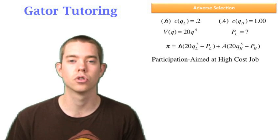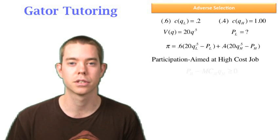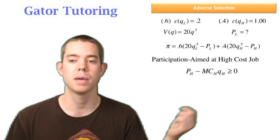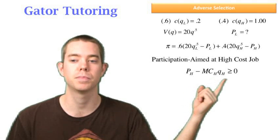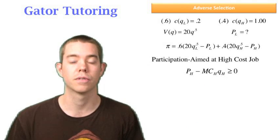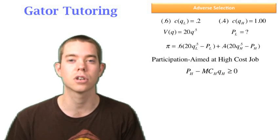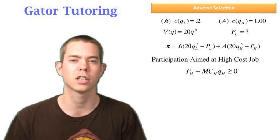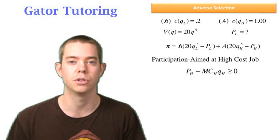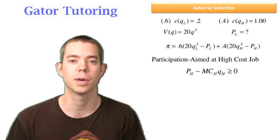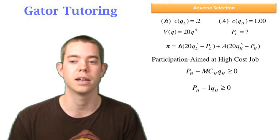Again it's aimed at the high cost job. This needs to make Joel at least participate with us, which says that the contract payment we pay him, minus the actual cost of the job, must be greater than or equal to zero. So if costs are high, we have to at least cover his cost, or he won't work with us. Because if it costs him a dollar to make it, and we're only going to pay him 90 cents per unit, well then he's going to take a loss and there's no reason he would do that. So that's the participation constraint, we can plug in our values, we know that the marginal cost, when it's high, is one dollar.